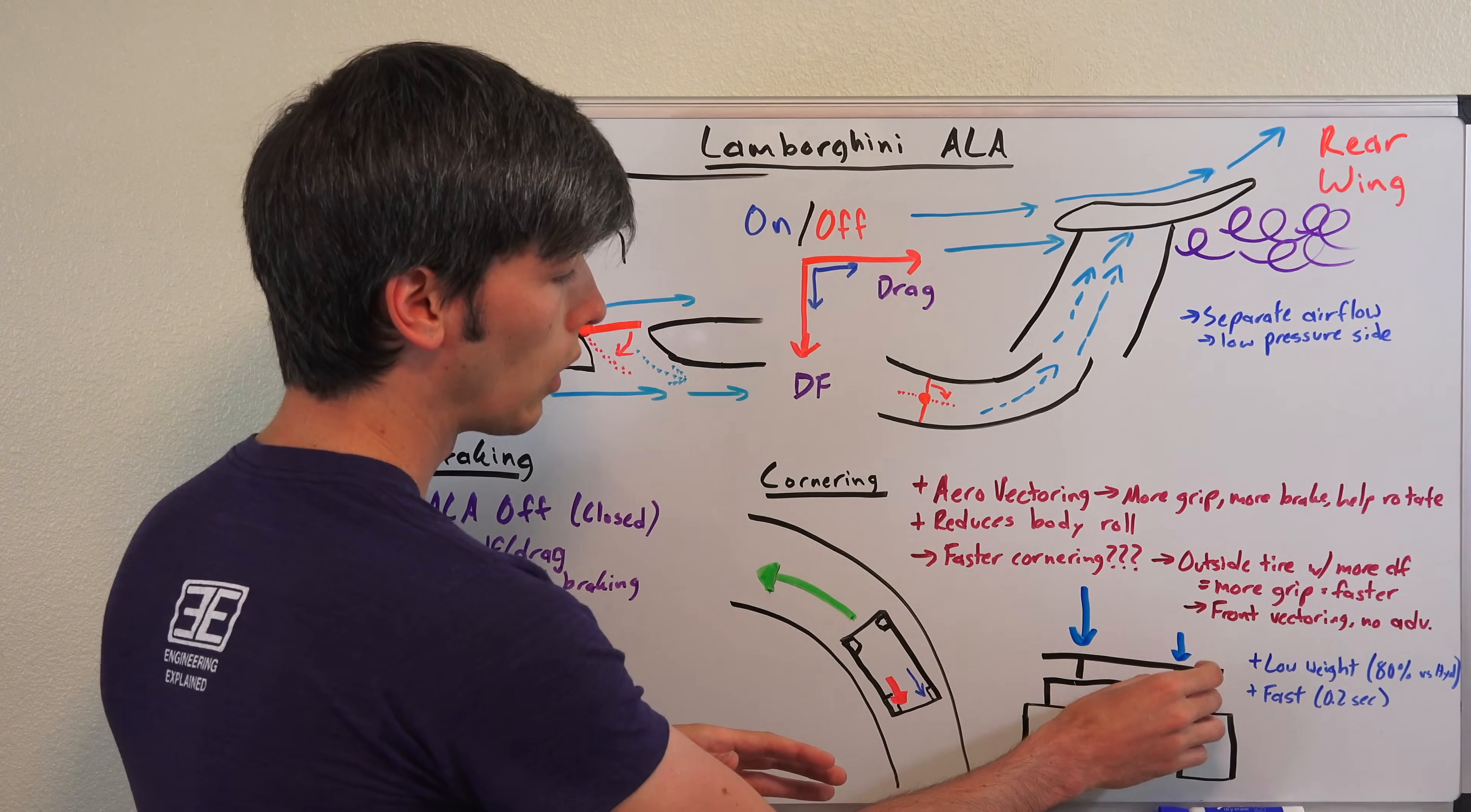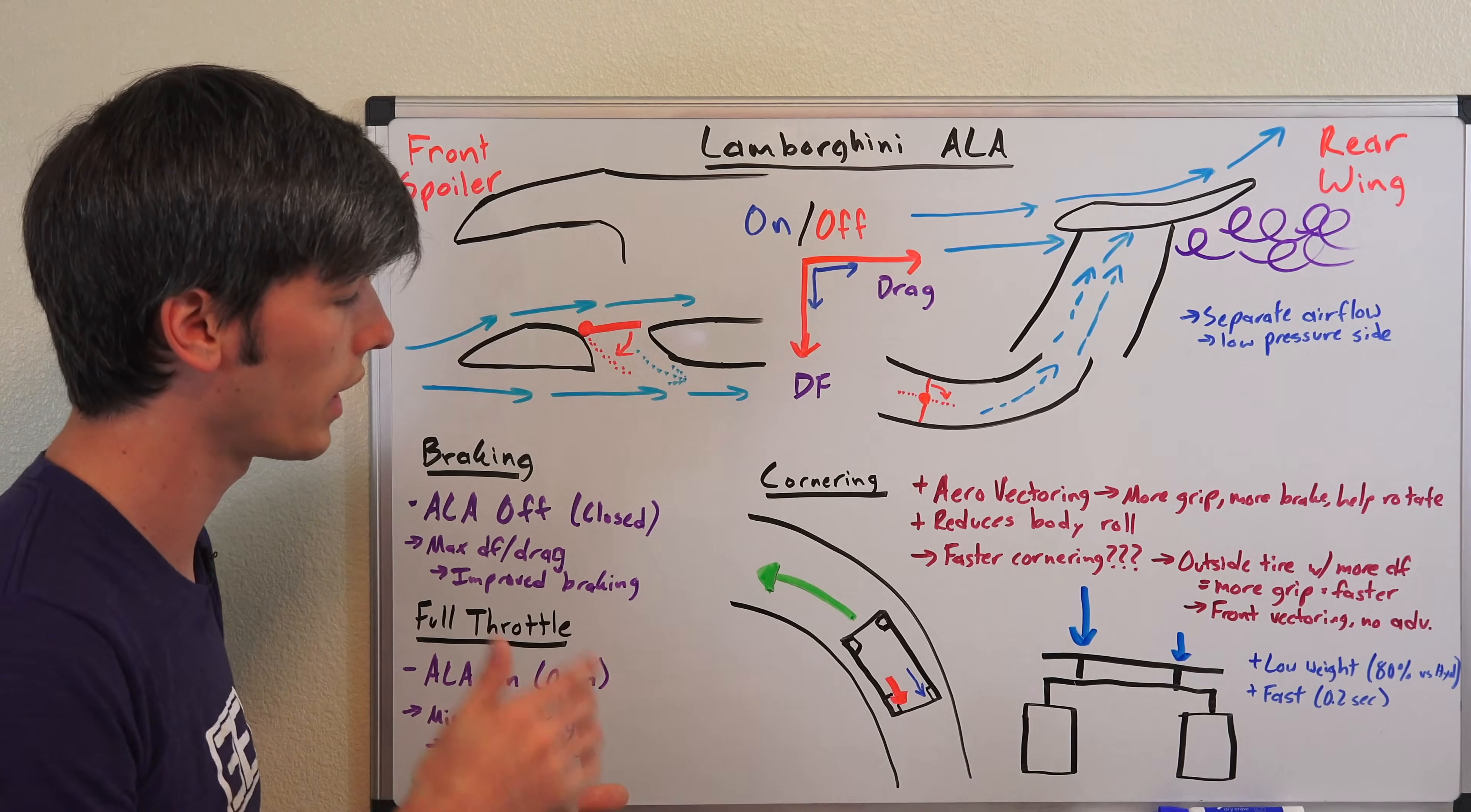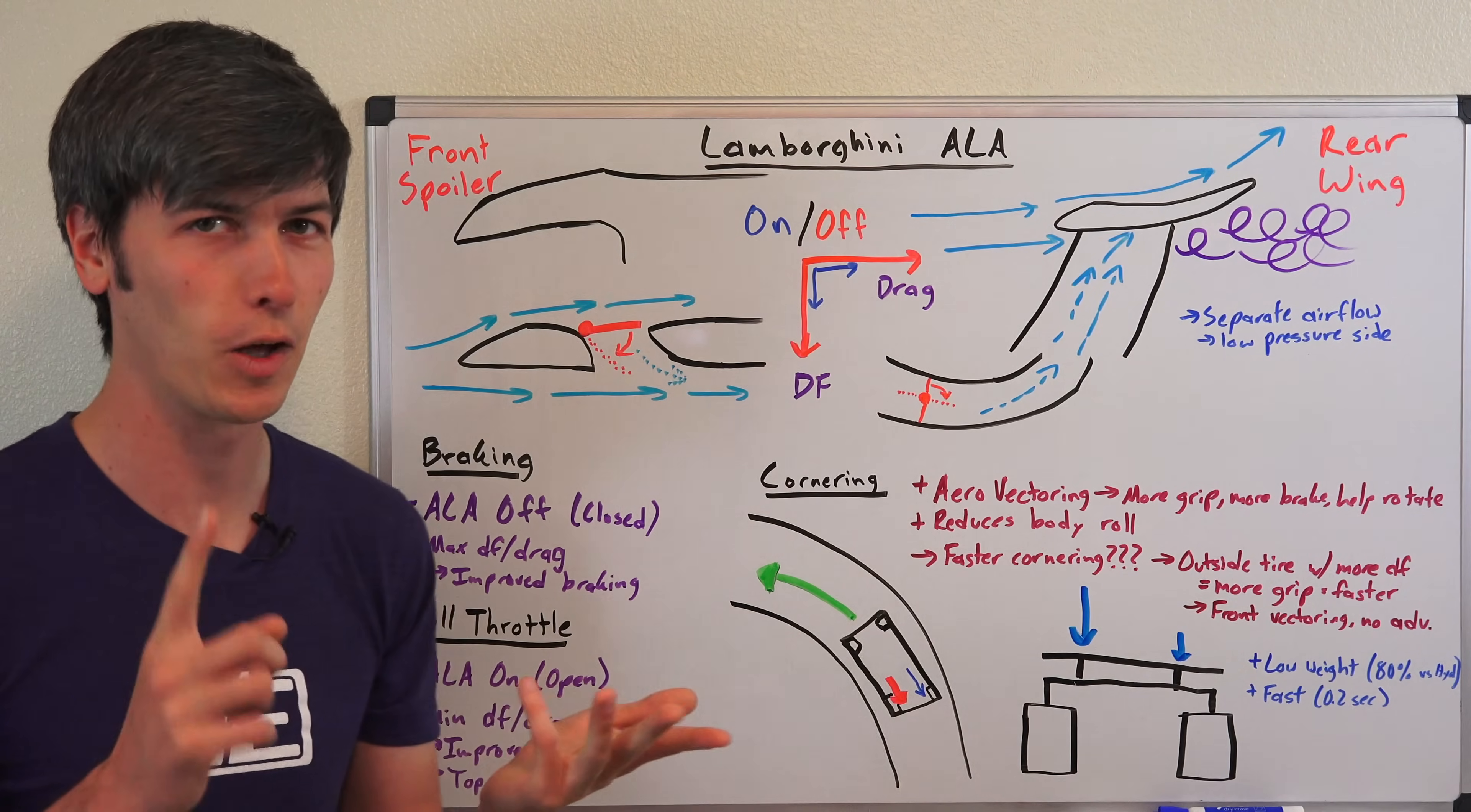So I don't think from a cornering speed perspective this is helping. It could help you rotate in braking, that makes sense. It could certainly help reduce body roll, but I don't think it's necessarily going to improve your cornering speed. Another interesting thing that I think helps prove that point...